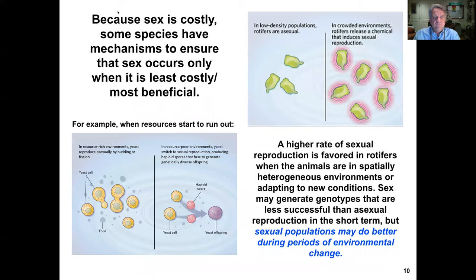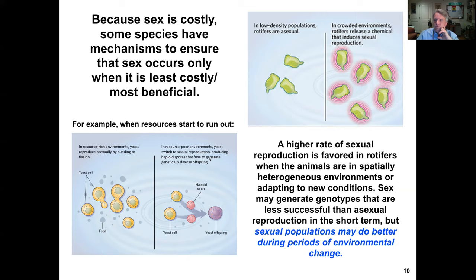Because sex is costly, some species have mechanisms to ensure sex only occurs when it's least costly and most beneficial. In resource-rich environments, yeast reproduce asexually by budding fission, but in resource-poor environments, yeast switch to sexual reproduction, producing haploid spores that fuse to generate genetically diverse offspring. In animals, rotifers in low-density populations are asexual, but in crowded environments they release a chemical cue that initiates sexual reproduction.